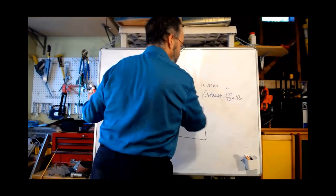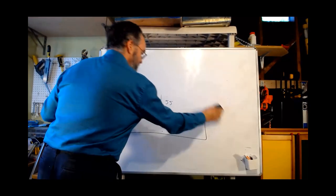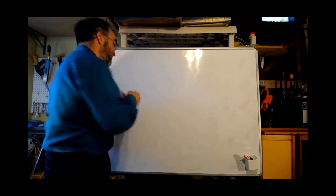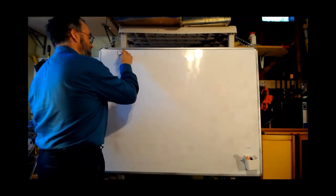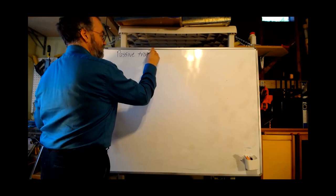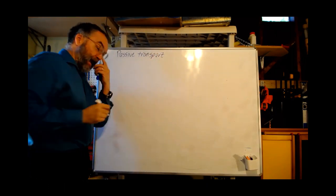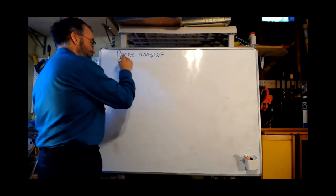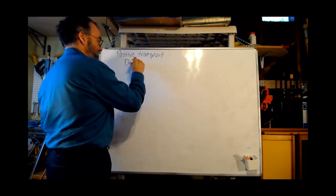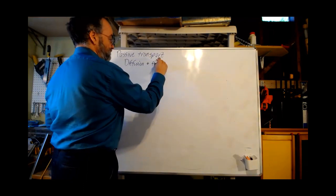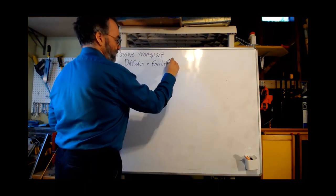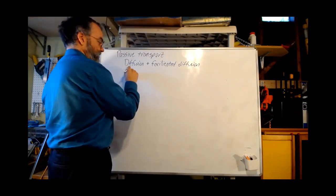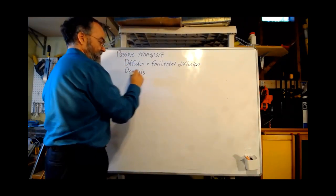That's the idea of diffusion and facilitated diffusion. It's worth noting that diffusion is a form of passive transport — it does not require any input of energy; it happens on its own. Diffusion and facilitated diffusion are forms of passive transport. Another form of passive transport is osmosis.